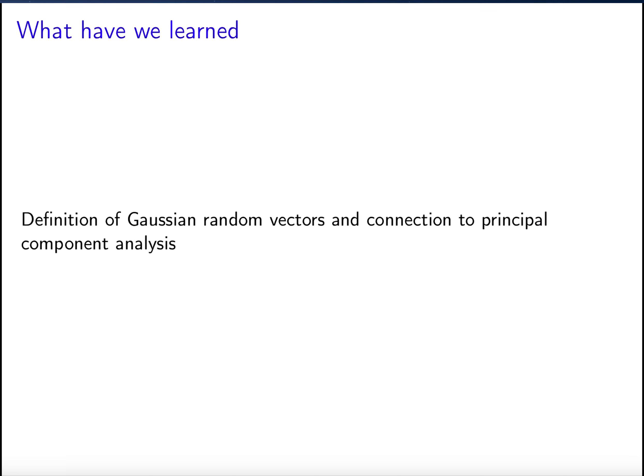So what have we learned? We defined Gaussian random vectors, connected them to principal component analysis, and hopefully acquired some geometric interpretation of their density. Thank you very much.